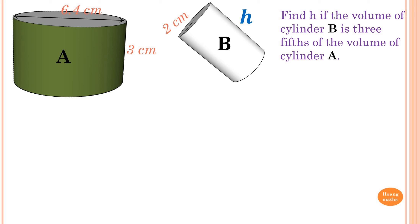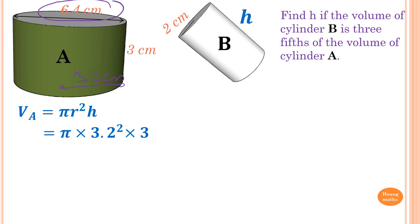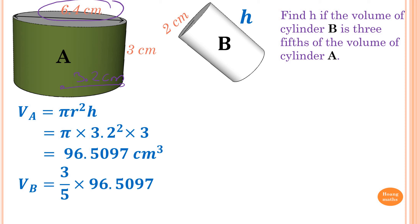Find the height if the volume of cylinder B is 3 fifths of the volume of cylinder A. First, find the volume of cylinder A: pi r squared h. The diameter of A is 6.4 centimeters, so the radius is 3.2 centimeters. So pi times 3.2 squared times 3 equals 96.5097 cubic centimeters. Volume B is 3 fifths of 96.5097, which gives me 57.9058 cubic centimeters.